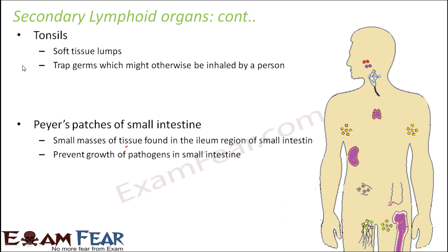The next secondary lymphoid organ is the tonsil. Tonsils are soft tissue lumps present near the throat area, existing in pairs — one on either side at the back of the mouth. They help to trap germs that might otherwise be inhaled. Antibodies are produced by immune cells in the tonsils, helping to prevent throat and lung infections by trapping germs and protecting the respiratory system.